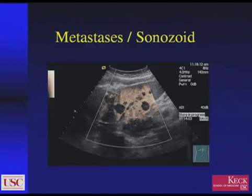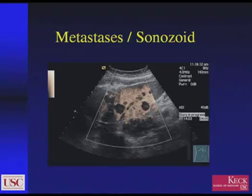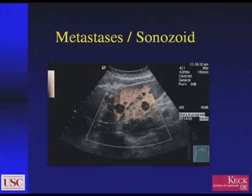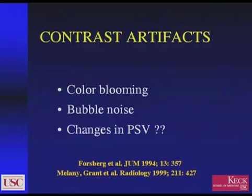This is an image of Sonazoid, and you can see here that the liver parenchyma is nicely enhanced in this delayed image, and that these multiple metastases within the liver are devoid of contrast — namely because anatomically they're devoid of reticuloendothelial cells, as would be seen in the normal liver.